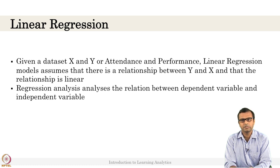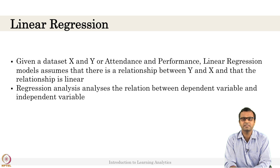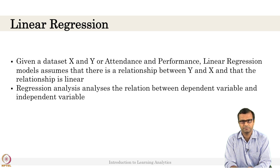The basic assumption is there is a linear relationship between the independent variable and dependent variable — that is attendance and performance. How do you establish this basic assumption? You simply plot them. When you plot them and there is a correlation, you can say there is a linear relationship. If the plot looks like fully scattered dots, there is no correlation and the data may not be suitable for linear regression — you might need to use some other algorithms. Regression analysis analyzes the relationship between dependent and independent variables to create the linear regression model.